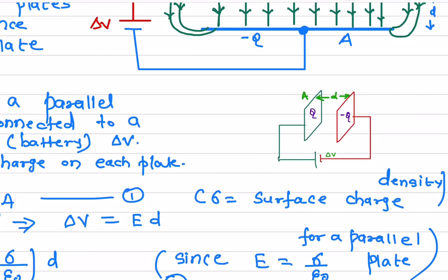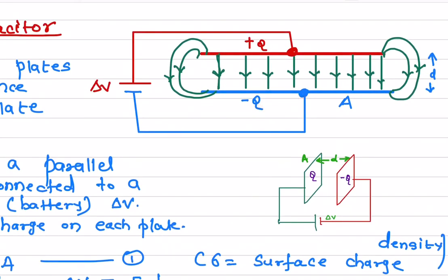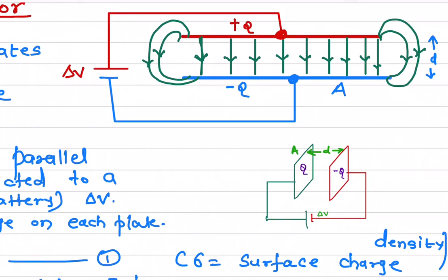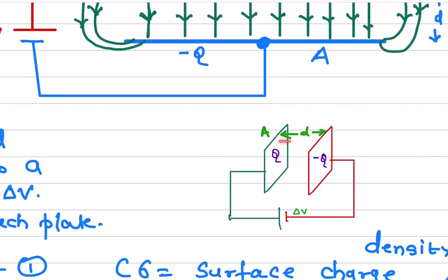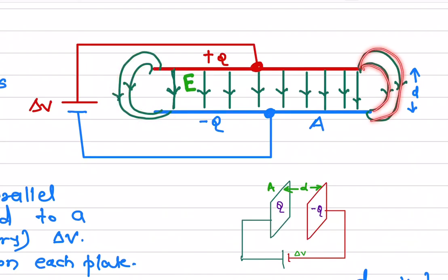First, we'll determine how much charge will be on each plate. The electric field of the capacitor always goes from the positive plate to the negative plate. This is shown in the diagram — this is the positive plate and this is the negative plate, giving the direction of the electric field. The lines at the edges are the fringe electric fields, which are not parallel to the plates.